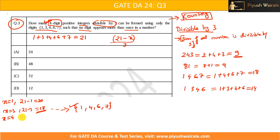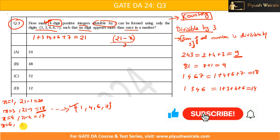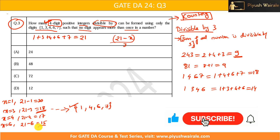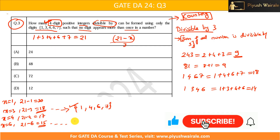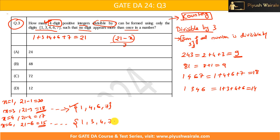What if x equals 4? Twenty-one minus four equals seventeen — not divisible by three. What if x equals 6? Twenty-one minus six equals fifteen, which is divisible by three. So removing 6 leaves us with {1, 3, 4, 7} — our second valid combination. What about x equals 7? Twenty-one minus seven equals fourteen, which is not divisible by three. So only removing 3 or 6 gives valid combinations.